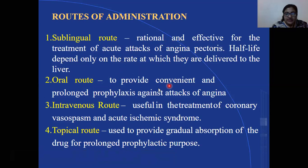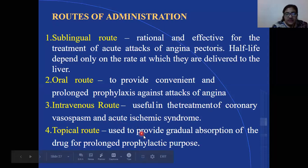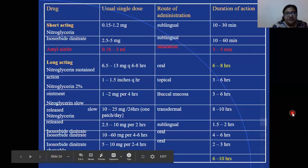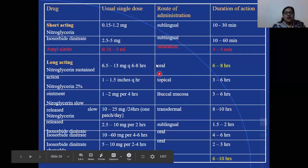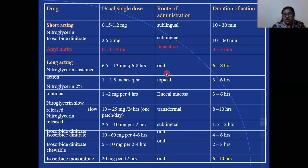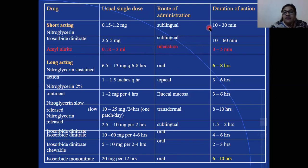The oral route provides a convenient and prolonged profile against attacks of angina. The intravenous route is useful in treatment of coronary spasm and acute ischemic syndrome. The topical route is used when gradual absorption of the drug over a longer period is needed. For amyl nitrate, the dose is 0.18–0.23 ml given as a single dose by inhalation, producing effect in just three to five minutes.